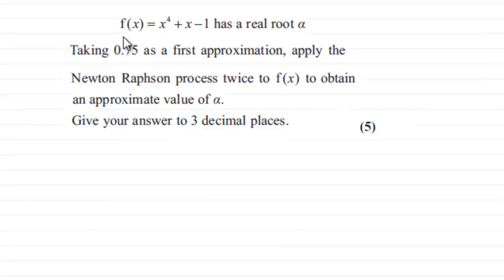Well, what we've got here is that f of x equals x to the power 4 plus x minus 1, and we're told it has a real root alpha. Taking 0.75 as a first approximation, we've got to apply the Newton-Raphson process twice